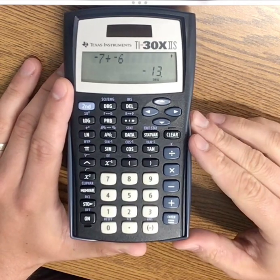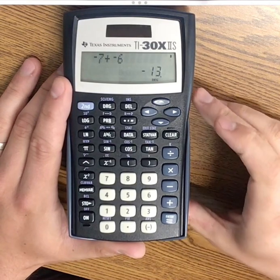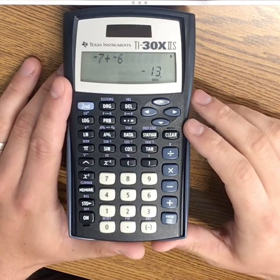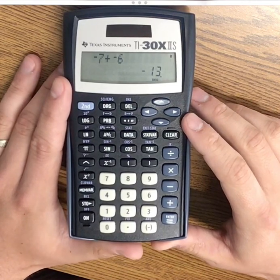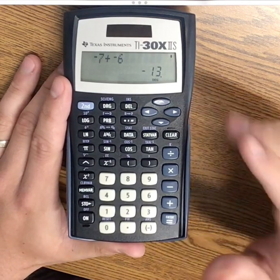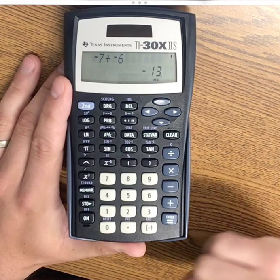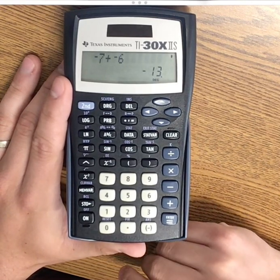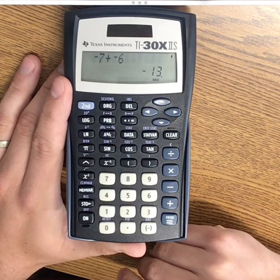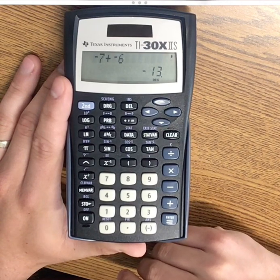If I were to do any order of operations with negative numbers, I would simply include the negatives along the way as if I was just retyping the question. For example, let's say I was doing 5 plus the quantity negative 6 plus 9, end parentheses,